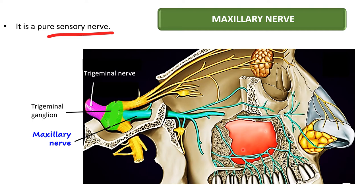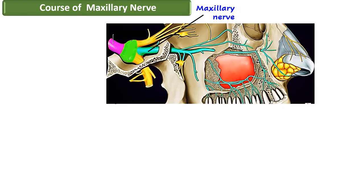Here in this picture we can see the middle cranial fossa, the maxillary bone, the orbit, and the external nose. The purple color is the sensory root of the trigeminal nerve, and anterior to that, the green area is the trigeminal ganglion. From the anterior aspect of the trigeminal ganglion, we can see three divisions emerging: this is the ophthalmic in light blue, this is the maxillary nerve, and this is the mandibular nerve. We will be considering the maxillary nerve in detail.